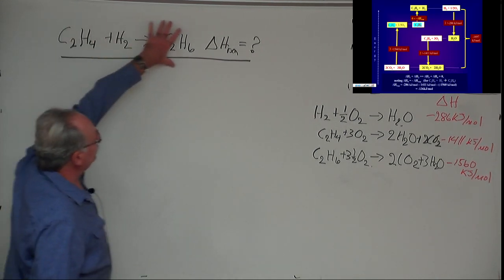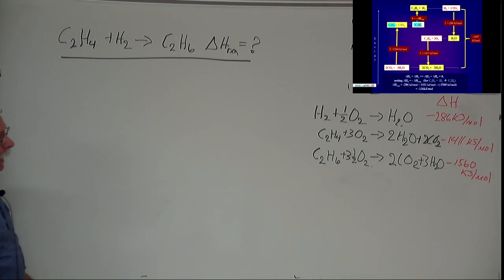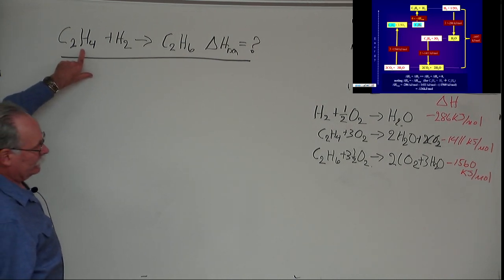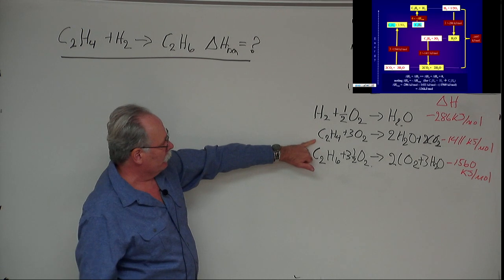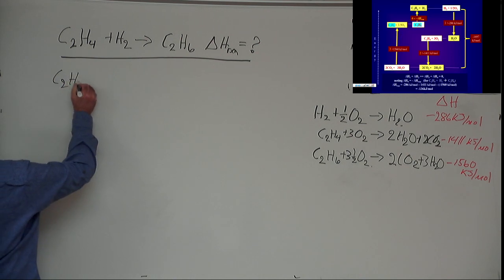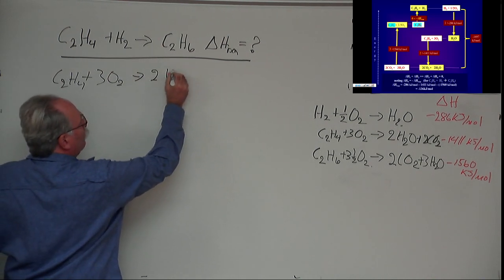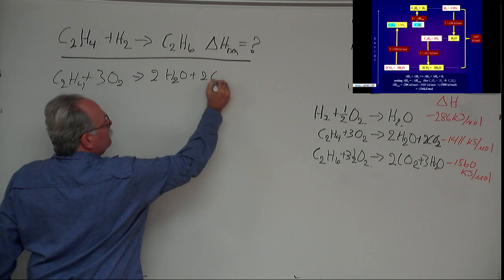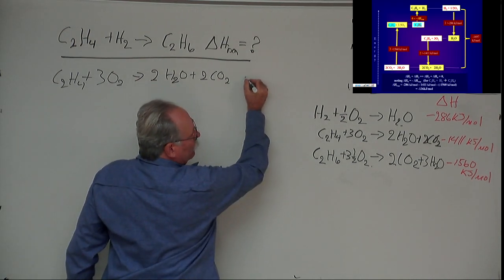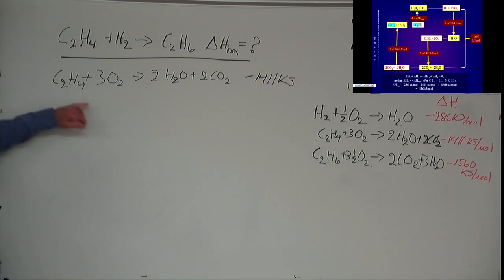So the quick way to solve this is first write out the equation you want and draw a line underneath it. Then you need data for each and every one of these species, and then you have to write the equations in a manner that they add up to the equation you want. So we need an equation with C2H4. I come over here, I have an equation with C2H4, so I'm going to simply write this underneath. I have C2H4 plus 3O2 forms 2H2O plus 2CO2, and this is written the way it is. I haven't multiplied it by any factors. So the energy associated with this is equal to minus 1411 kilojoules, and that's per mole of this.